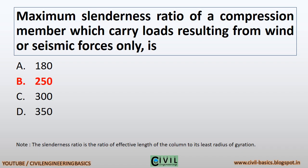Maximum slenderness ratio of a compression member which carries loads resulting from wind or seismic forces only is 250. Note: the slenderness ratio is the ratio of effective length of the column to its least radius of gyration.